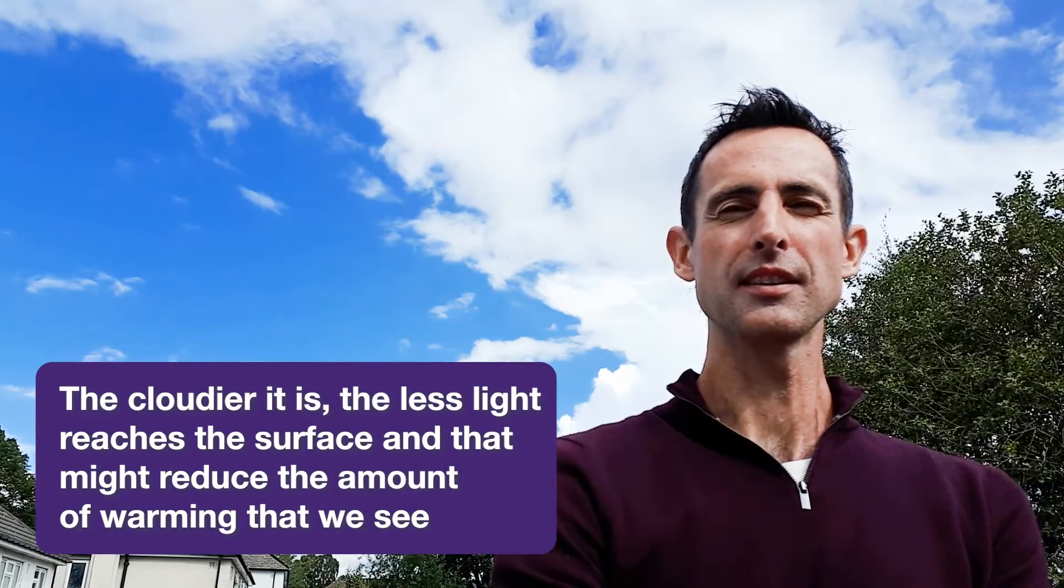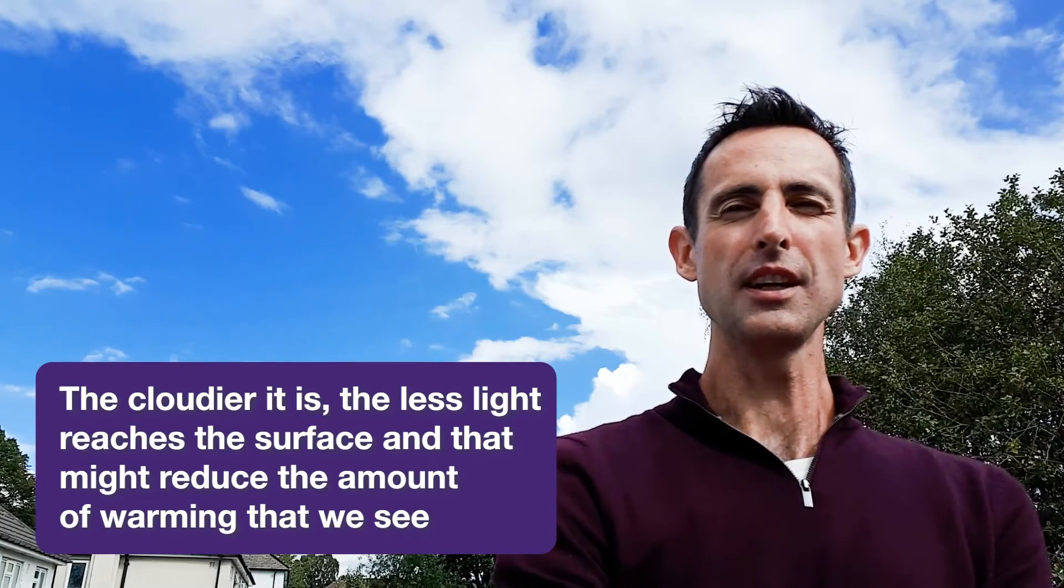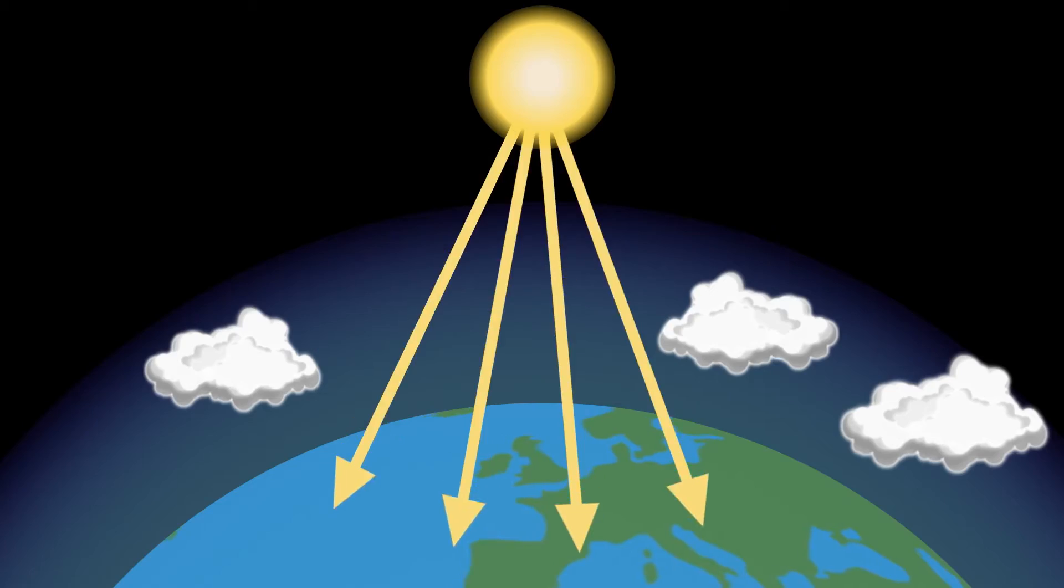So the cloudier it is, the less light reaches the surface, and that might reduce the amount of warming that we see. But clouds are also good at absorbing the infrared radiation, or heat, that the Earth is losing to space, trapping it in the atmosphere, a bit like greenhouse gases do.